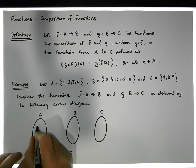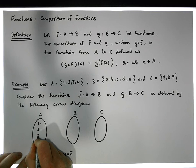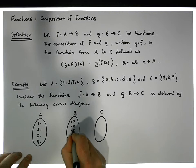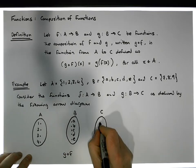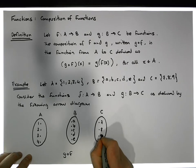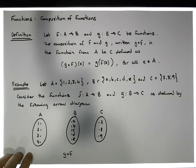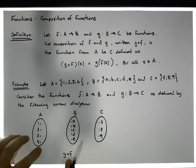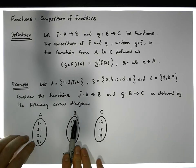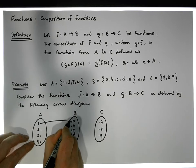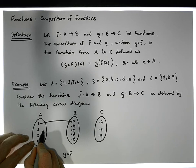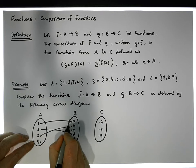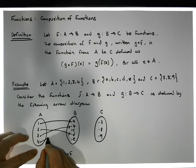So the set A contains the values 1, 2, 3, and 4, and the set C contains the values 7, 8, and 9. Now let's say for argument's sake that the definition of f, which takes values from A to B, is that 1 is taken to a, 2 is taken to d, 3 is taken to b, and 4 is taken to c.